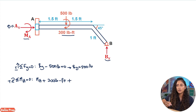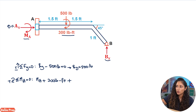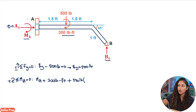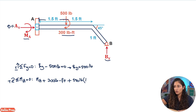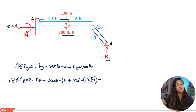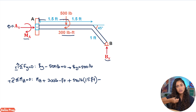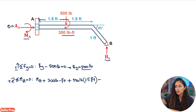Next we include the 500 lb force: it's positive because the resulting moment is clockwise. We multiply it by its moment arm of 1.5 feet — that's the distance from A to where the force is applied. Then for By, it's negative because it acts opposite to our sign convention; By going up creates a counterclockwise moment. We use By = 500 lbs multiplied by its moment arm.